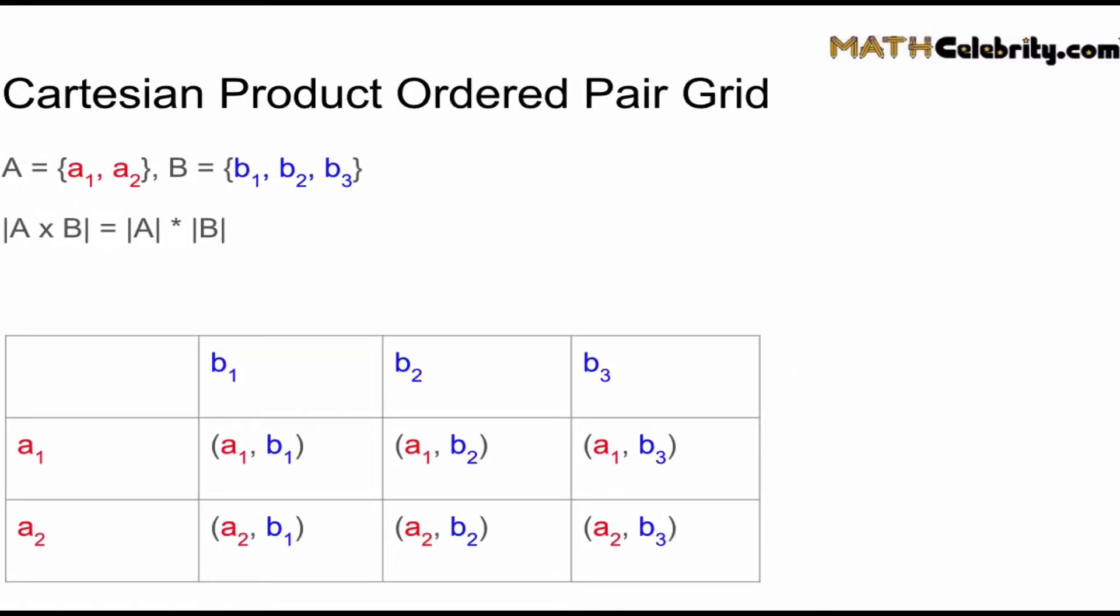Let's look at an example. We'll take a set A with two elements, a₁ and a₂, and set B with three elements, b₁, b₂, and b₃. We expect that the Cartesian product has